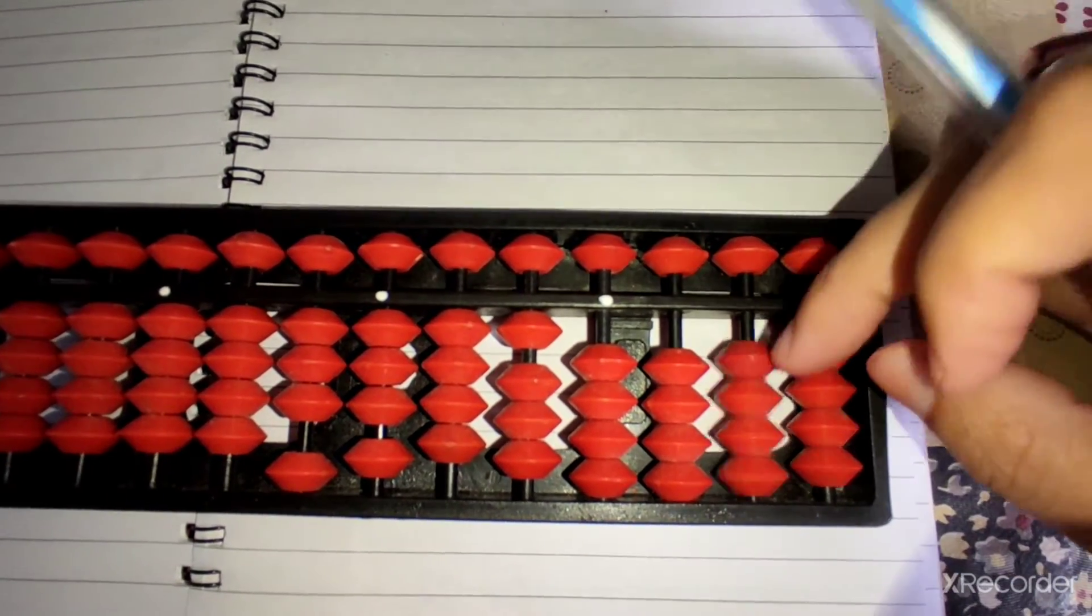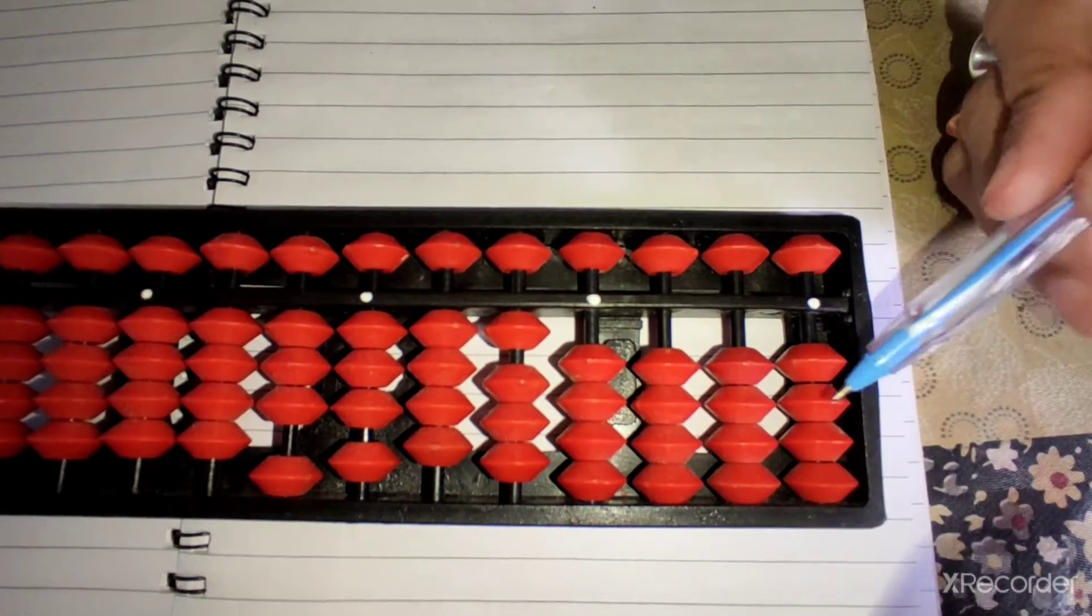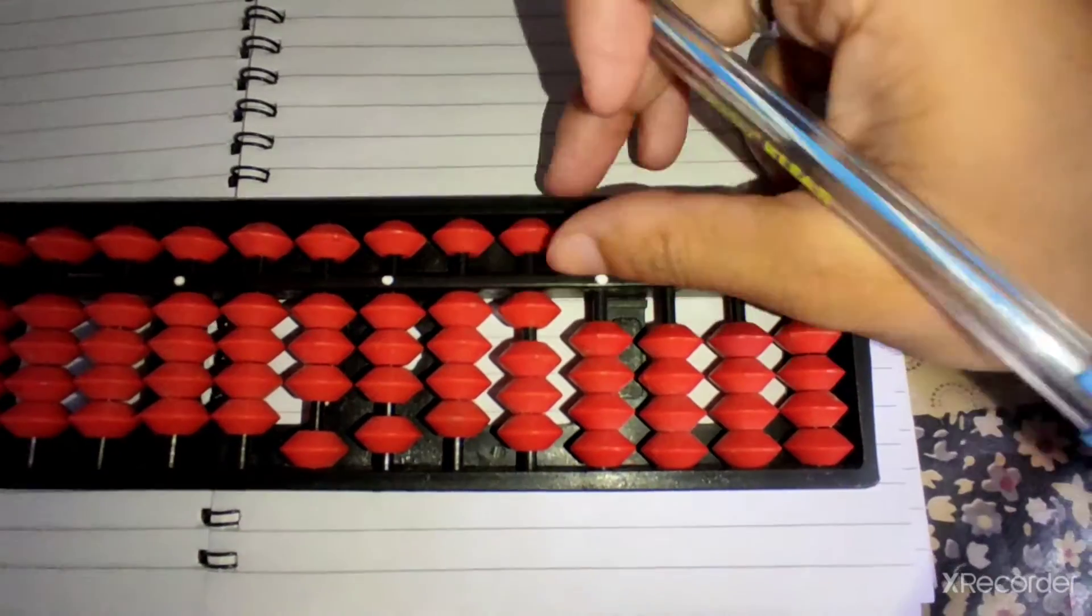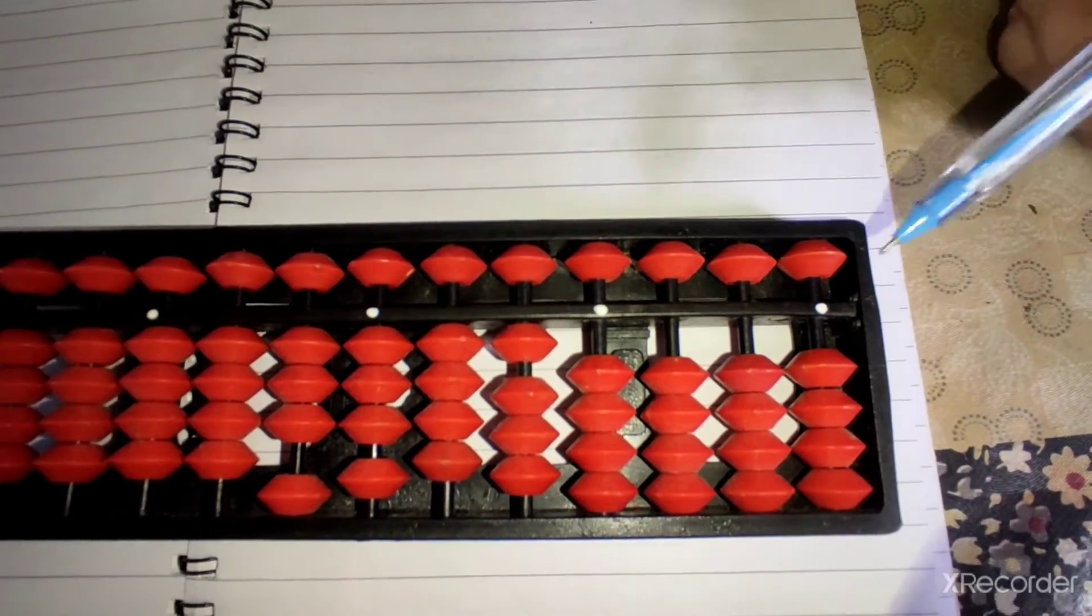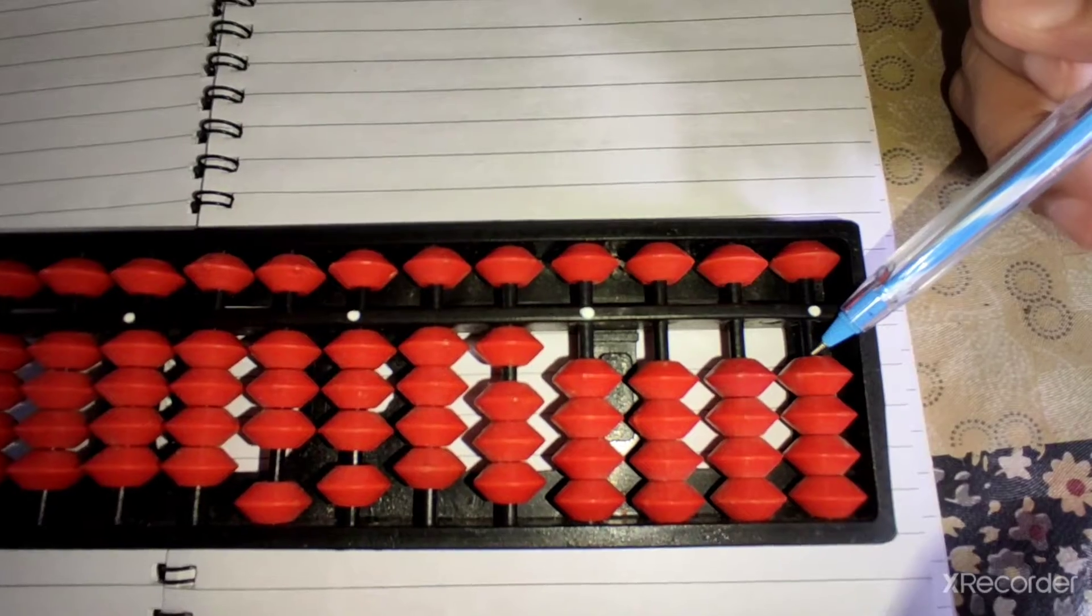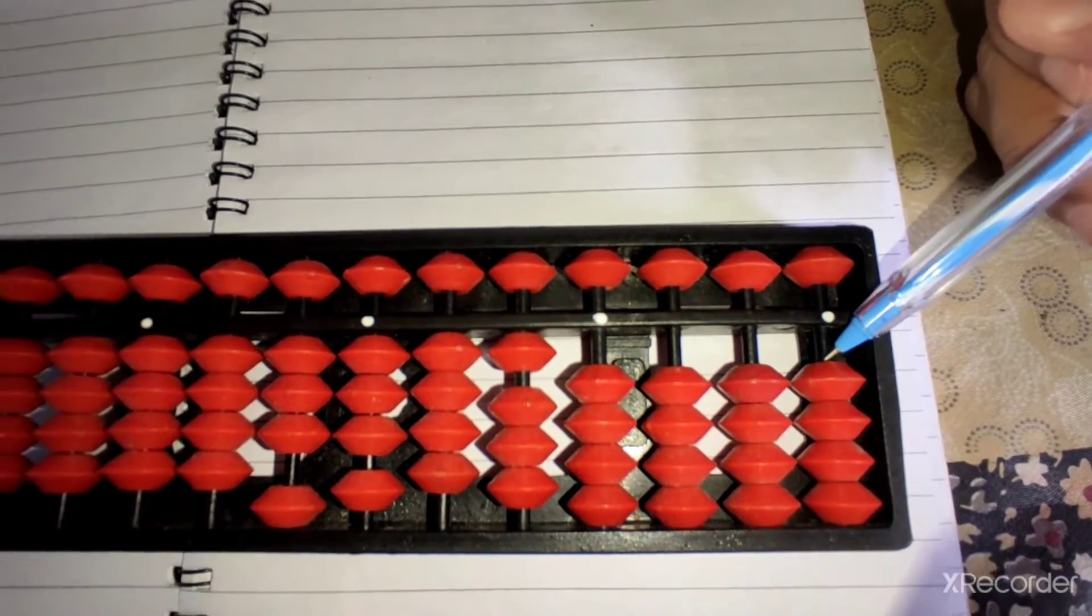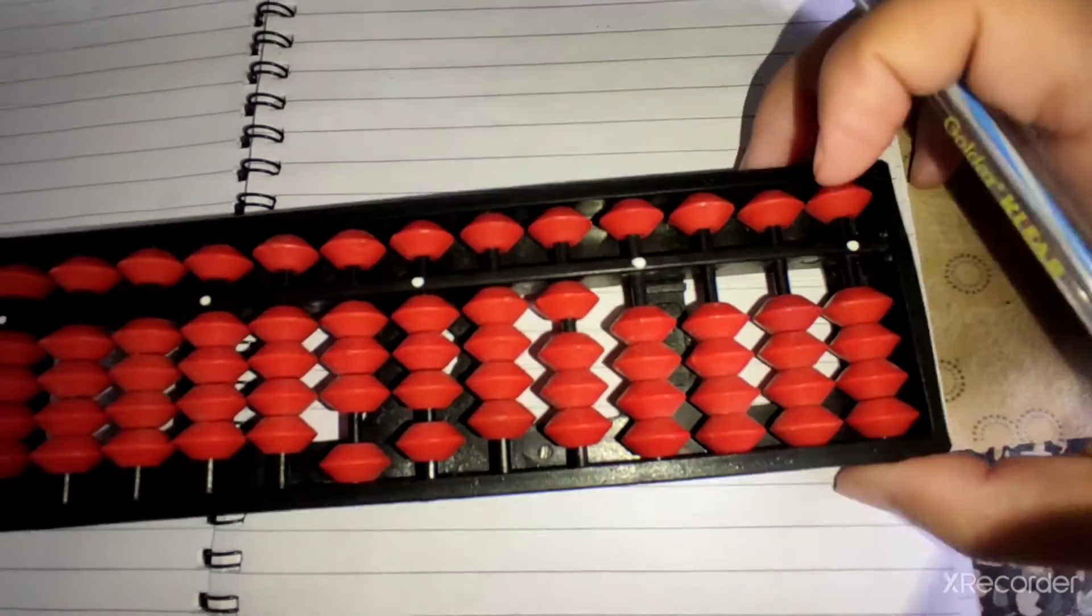The lower side beads are earth beads and the upper side beads are heaven beads, and the beads are attached to the rod.